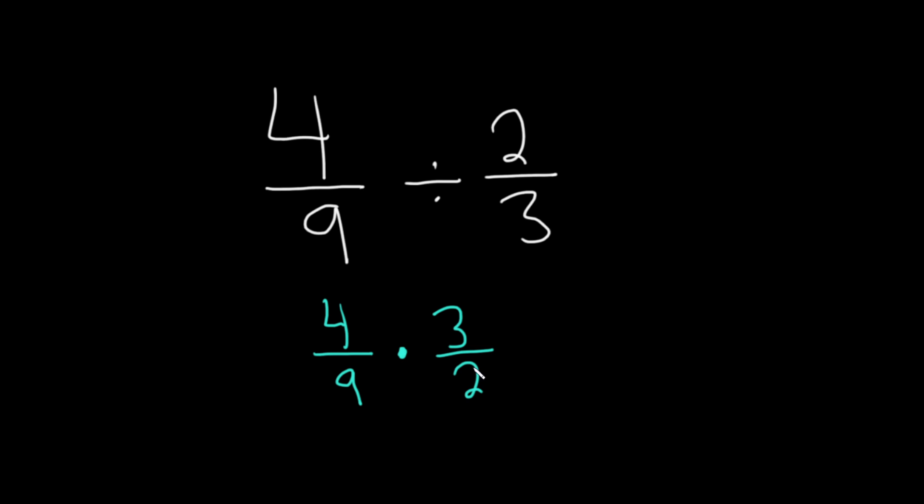Now we can do some simplification. 2 goes into 2 once, goes into 4 twice, 3 goes into 3 once, it goes into 9 three times. This is going to give us 2 times 1, which is 2, 3 times 1, which is 3.